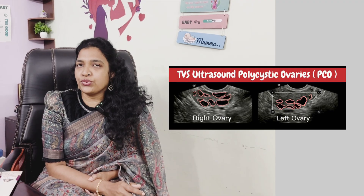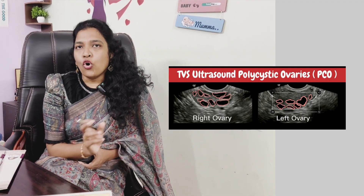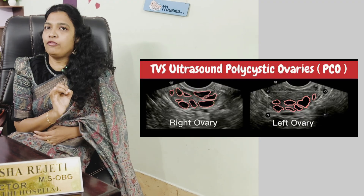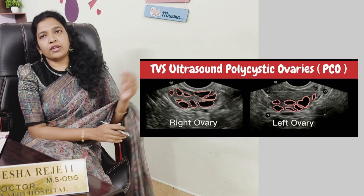To diagnose PCOD, we take the history and assess symptoms. On ultrasound, you can see enlarged ovaries with small multiple follicles around them, and increased ovarian volume. Blood tests include FSH, LH, estrogen, and testosterone — the male androgen hormones.